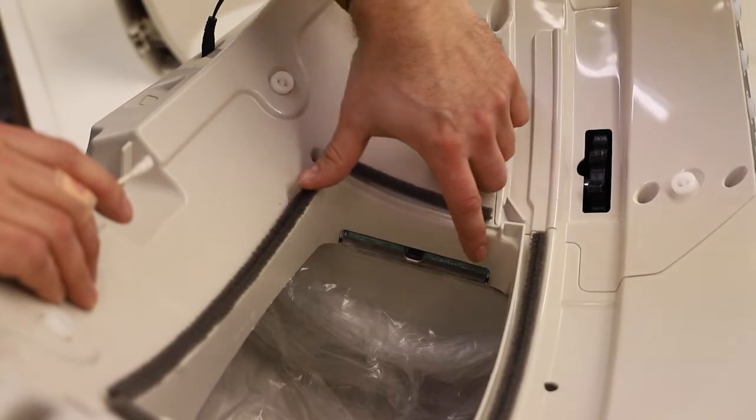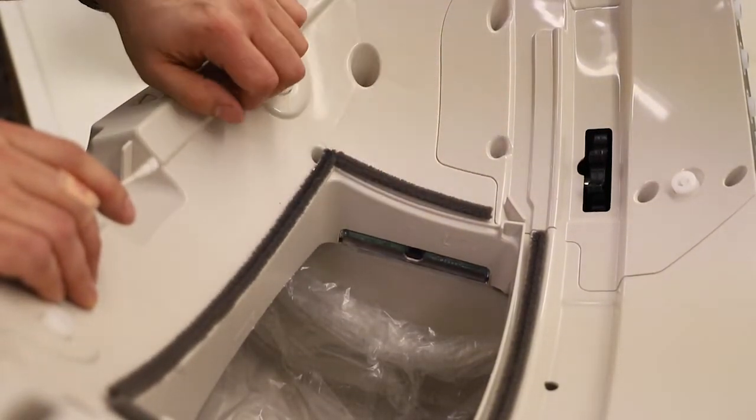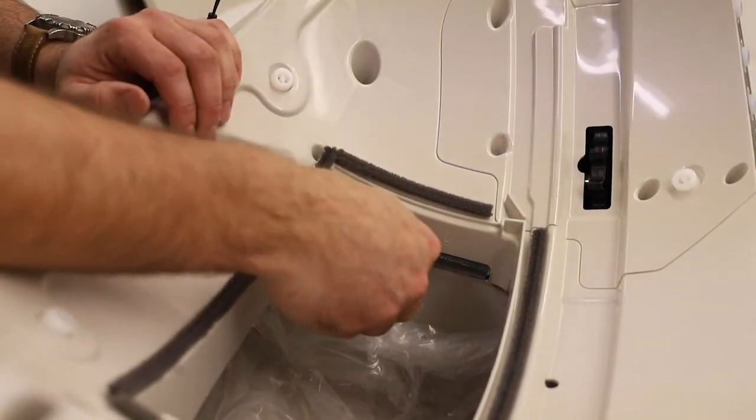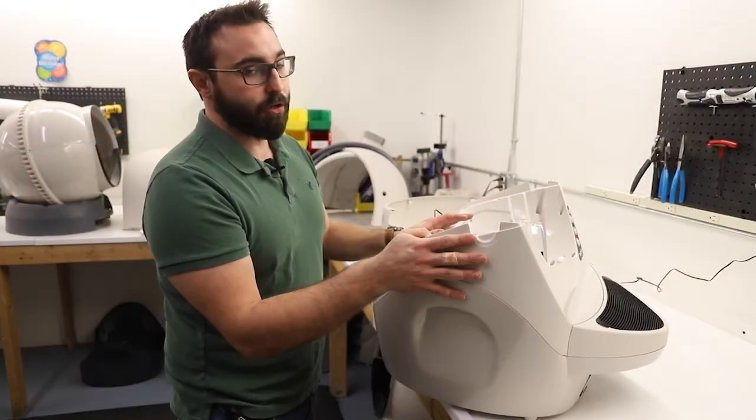So down in here, we have the DFI sensor, the drawer full indicator, and in the middle, there's a little cutout on this clear part and a black cover. For that, we're going to take a Q-tip, swipe it, and we should be good to go.